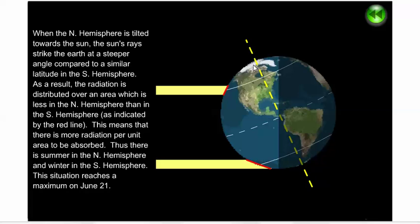Meanwhile, in the southern hemisphere, that hemisphere is tilted away from the sun. The light gets spread out over a larger area, the sunlight is coming in at a lower angle, and so the heating power of the sun is reduced in the southern hemisphere. That's why the southern hemisphere is having its winter while the northern hemisphere has its summer.